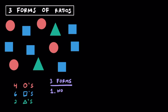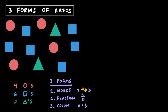The first form we have is using words, and the word we're going to use to represent a ratio is typically the word 'to', A to B. The second form is fraction form, and while it looks like a fraction and has some similar features, we want to remember that we're talking about ratios here. The last form is using a colon, which is two dots. When dealing with ratios, we can use the word 'to', a fraction bar, and a colon.